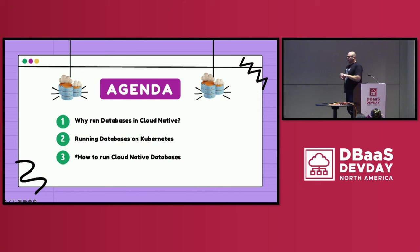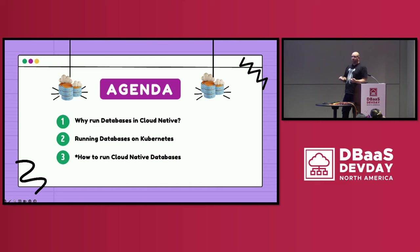So there are three things I want to cover throughout the rest of the 20 minutes I've got — because of the two minutes extra I just stole to introduce myself. Why run databases in cloud-native? That's going to go into a little bit of the misconceptions we have around running databases in and around Kubernetes. What options do we have when it comes to running databases on Kubernetes? And then how — how are we going to run those databases?